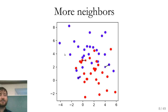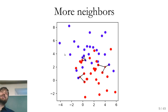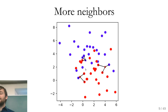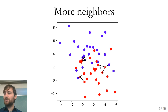Instead of one neighbor, we could use three neighbors. With three neighbors, the three nearest points in the training set vote, and we take the majority class. Interestingly, going from one neighbor to three neighbors can flip all the predictions. For one star, if two of the three nearest neighbors are blue and one is red, the prediction becomes blue. This generalizes to any number of neighbors.